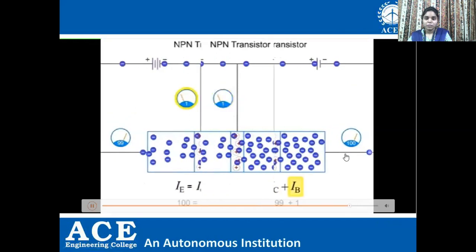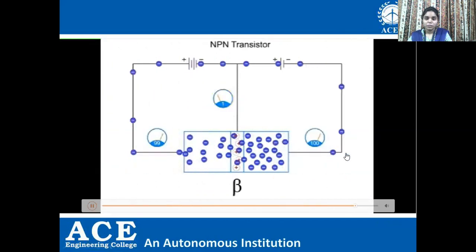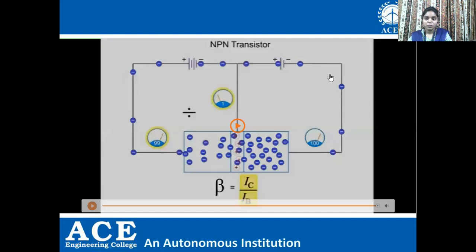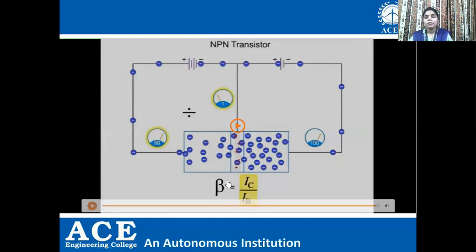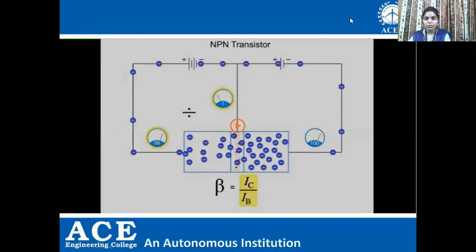An important characteristic of a transistor is something called beta. Beta is calculated by dividing the collector current IC by the base current IB. This is how electrons flow and constitute currents IB, IC, and IE. Beta equals IC divided by IB, and this is the amplification factor. We are going to study more about beta in our upcoming classes.